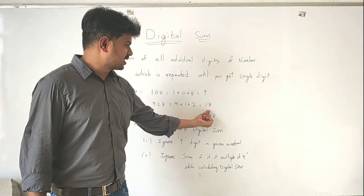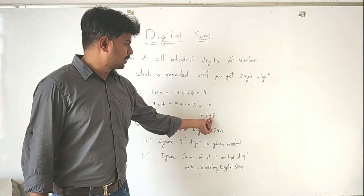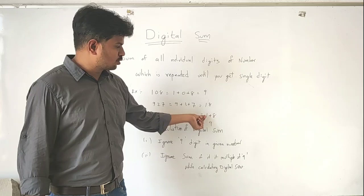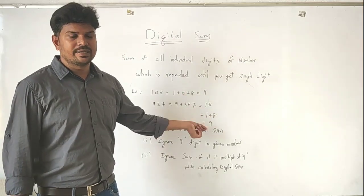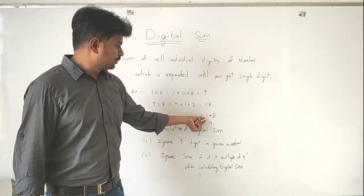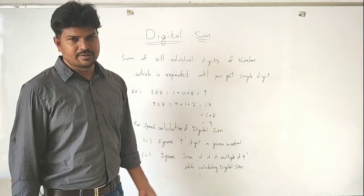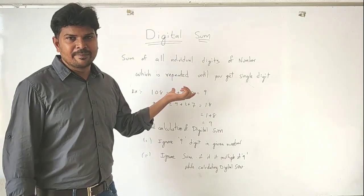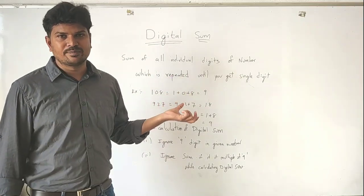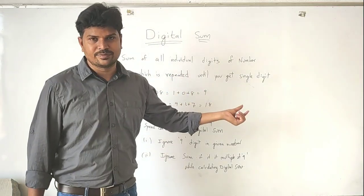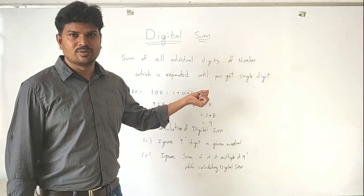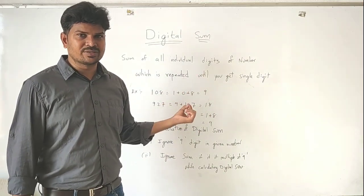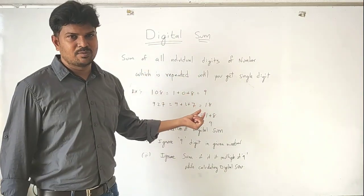Since 18 has two digits, you have to apply digital sum again: 1 plus 8 equals 9. This process has to be repeated until you arrive at a single digit number. So if there is a big or huge number, this process takes a lot of time.